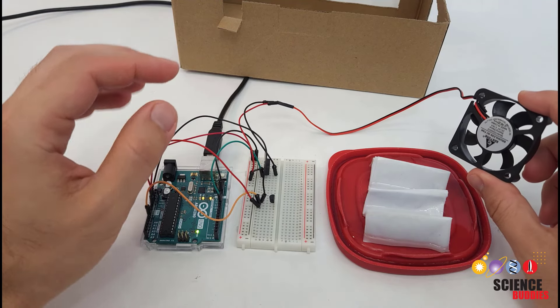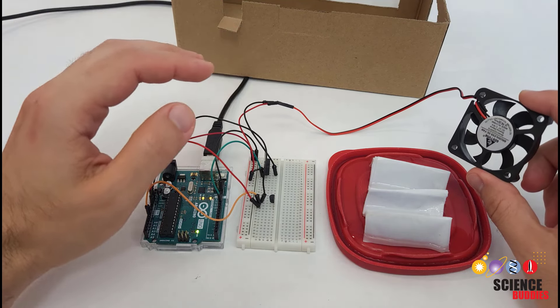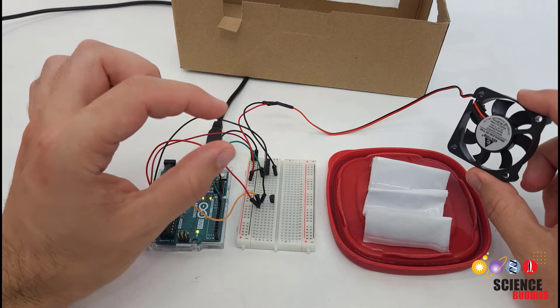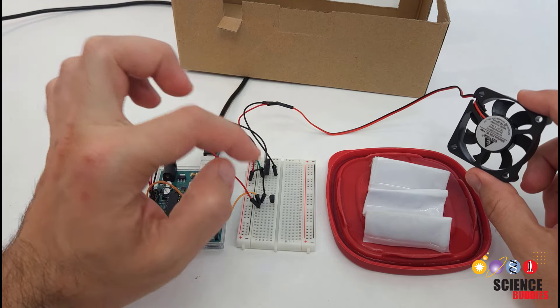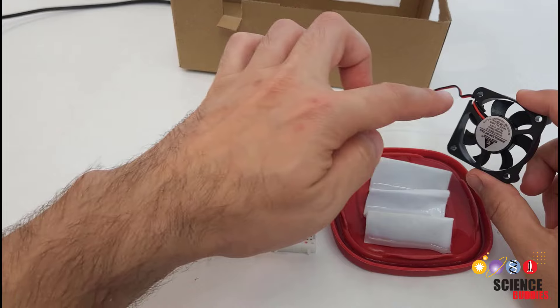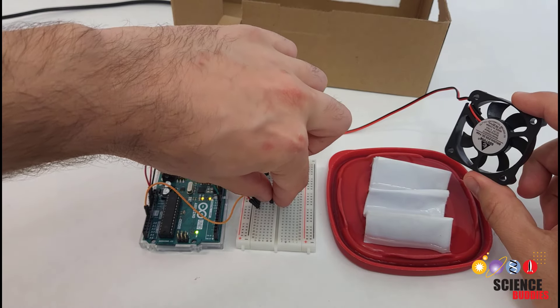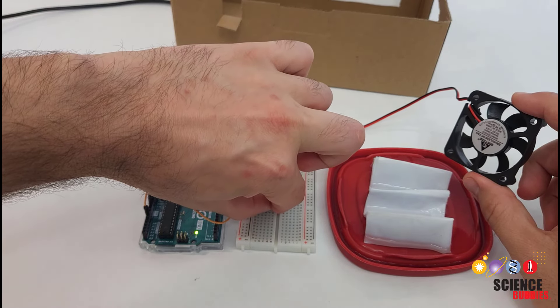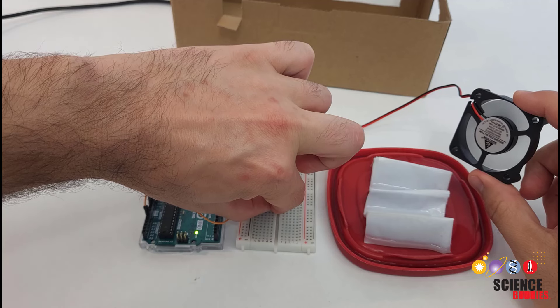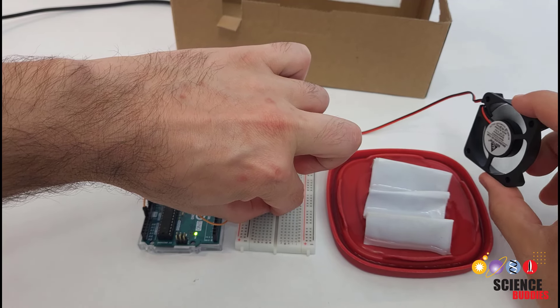Just quickly demonstrating the behavior here, you could use something like a heat lamp to simulate heat from the sun heating up a building. I am just going to pinch the temperature sensor with my fingers to make it heat up. So right now, you'll see that the fan is not moving. But when I pinch the sensor, my fingers are going to heat it up. And then the Arduino is programmed to turn the fan on.